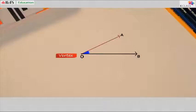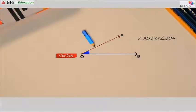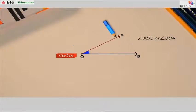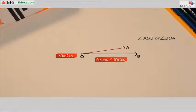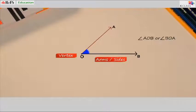The angle is represented like this: angle AOB or angle BOA. The angle is always written with a vertex in the middle. OA and OB are called the arms or sides of the angle. Now this distance between the two rays is measured in degrees. Depending on the distance they form, the angles have different names.